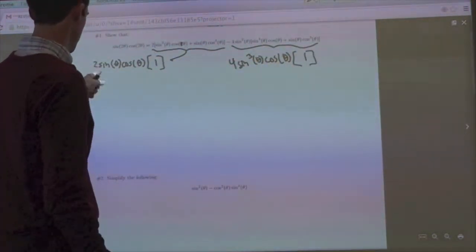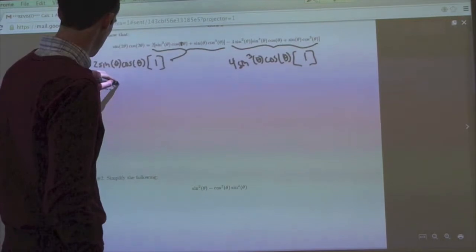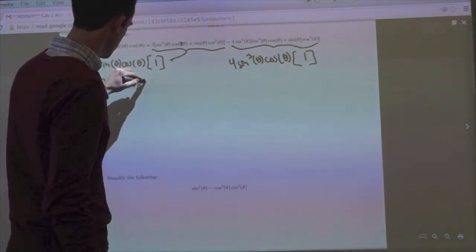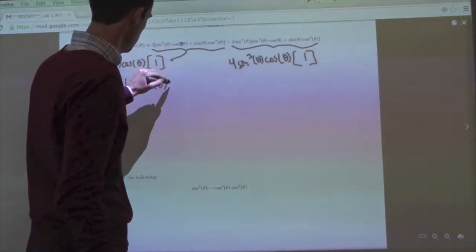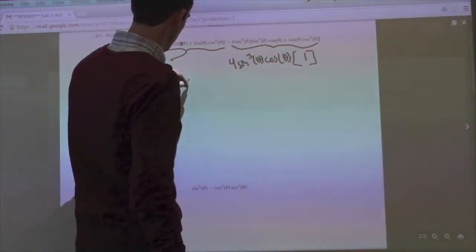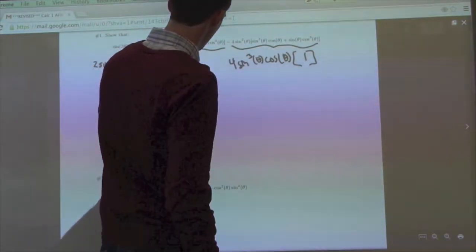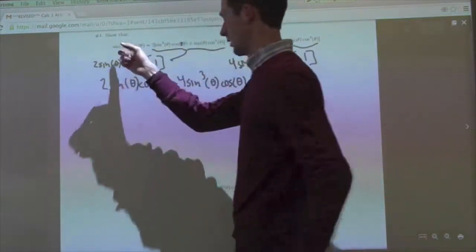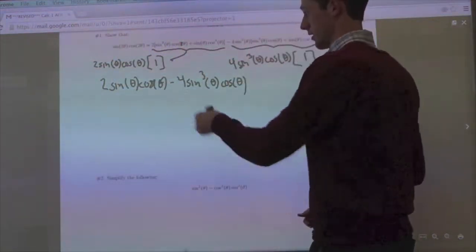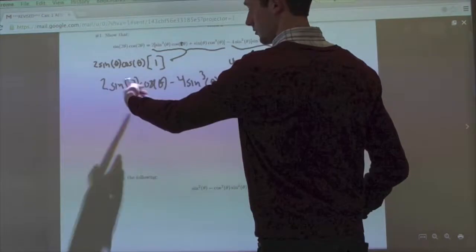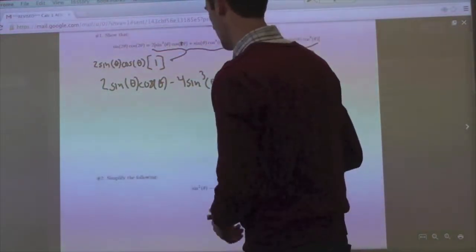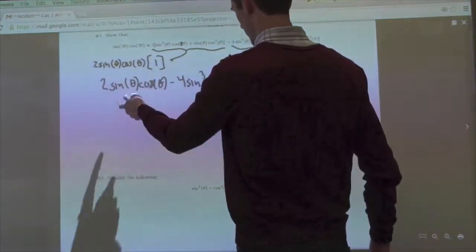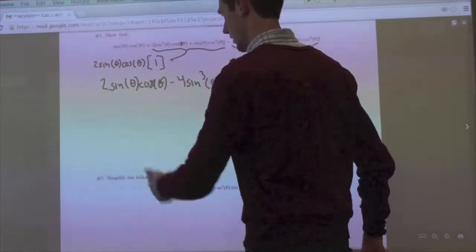So what we have now is two sine theta cosine theta minus four sine cubed theta cosine theta. Now we'll get to this other side in just a minute here, but first off, we're going to notice that we can pull out a two from this, so we're going to factor again. So we'll pull a two out of both of them, we can pull a sine out of both of them, and a cosine out of both of them.